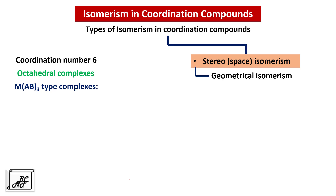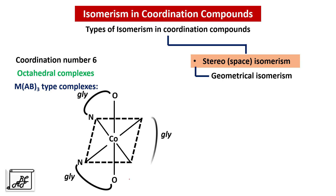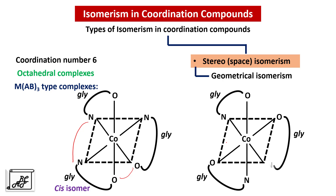The next type is MAB3 type complexes, where AB is an unsymmetrical bidentate ligand having two different donor atoms at both ends — an example is glycine. In the cis isomer the two nitrogen atoms are on the same side and two oxygen atoms are on the same side, whereas in the trans isomer these atoms are on the opposite side: the two nitrogen atoms and two oxygen atoms are on opposite sides.